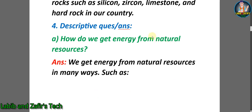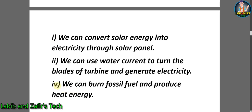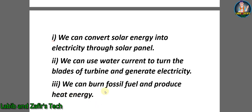Now let's go through some descriptive question answers. a) How do we get energy from natural resources? Answer: We get energy from natural resources in many ways — number 1: we can convert solar energy into electricity through solar panels; number 2: we can use water current to turn the blades of a turbine and generate electricity; number 3: we can burn fossil fuel and produce heat energy.